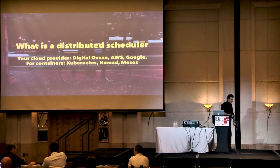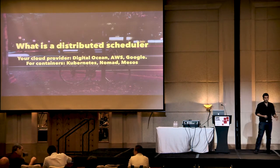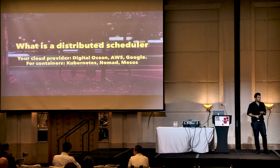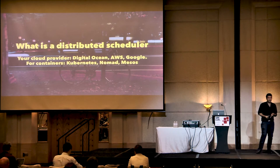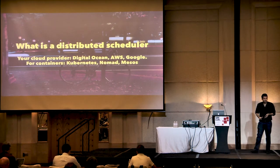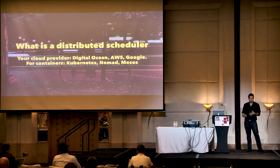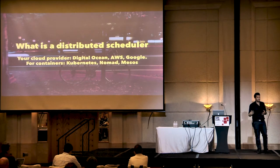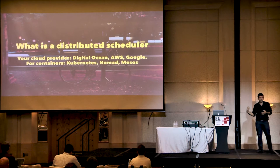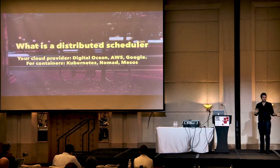So what is a distributed scheduler? Almost every person in this room has probably already used one. If you're using a cloud hosting company like DigitalOcean, Amazon, or Google, you're using a distributed scheduler. A lot of developers or DevOps people think of distributed schedulers as Kubernetes, Docker, containers — but things like VMware or your cloud are also distributed schedulers. They're just scheduling virtual machines.